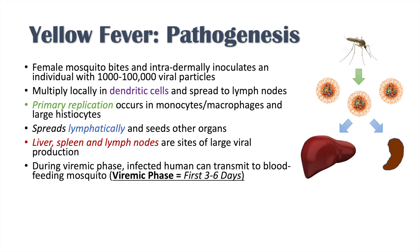During the viremic phase — the first three to six days of infection — an infected human can transmit the virus to a blood-feeding mosquito. Another mosquito of the Aedes or Haemagogus species can bite that person, become infected, and then act as a vector to infect other individuals.